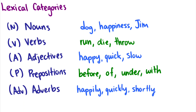Now let's jump into lexical categories. Before we talk about sentence structure and how groups of words form together, we need to talk about the categories of individual words. We have lexical categories such as nouns, verbs, adjectives, prepositions, and adverbs. Nouns are typically described as people, places, or things — words like 'dog' or 'Jim' — but some words like 'happiness' are nouns without fitting that description neatly.